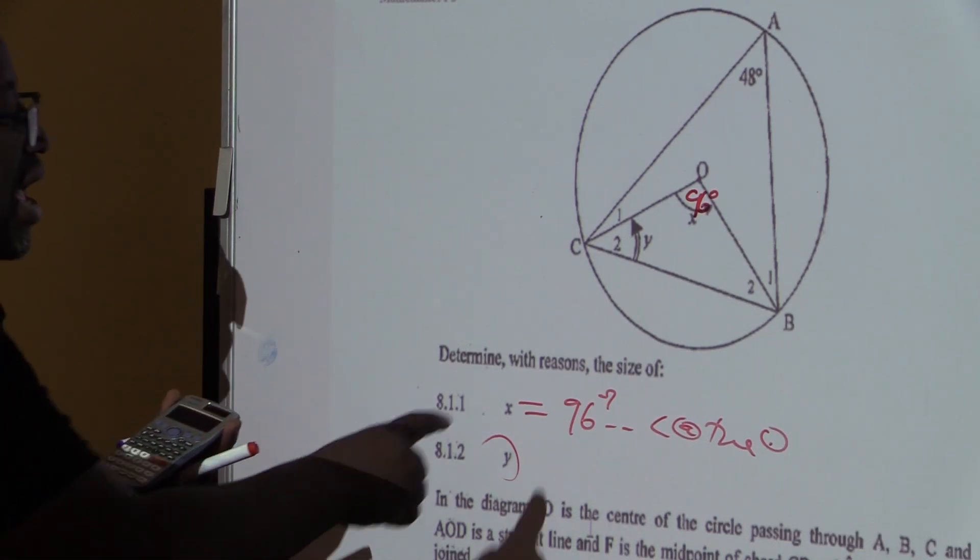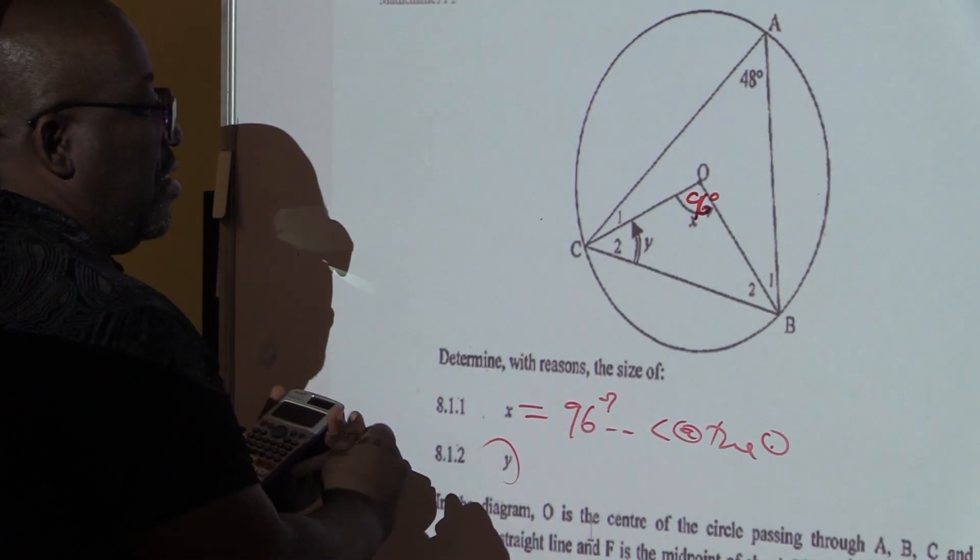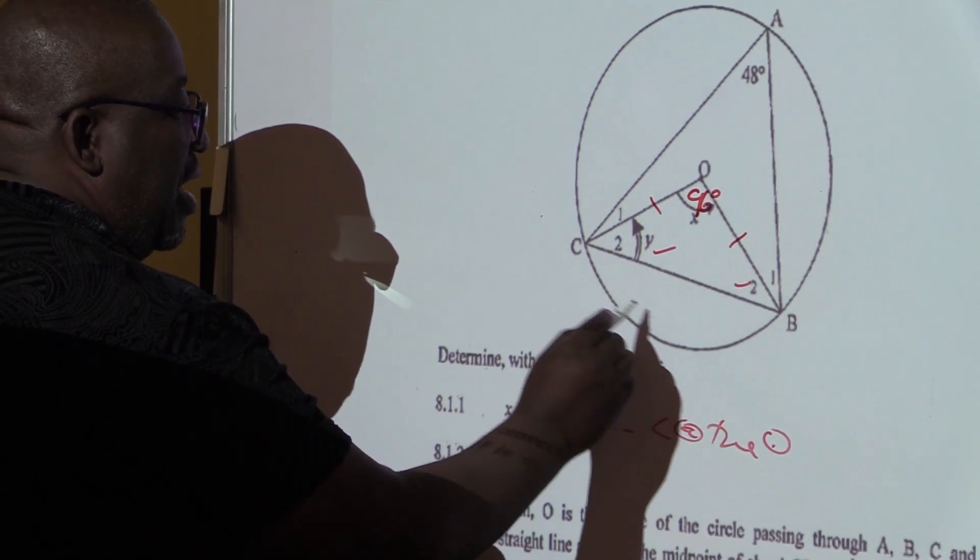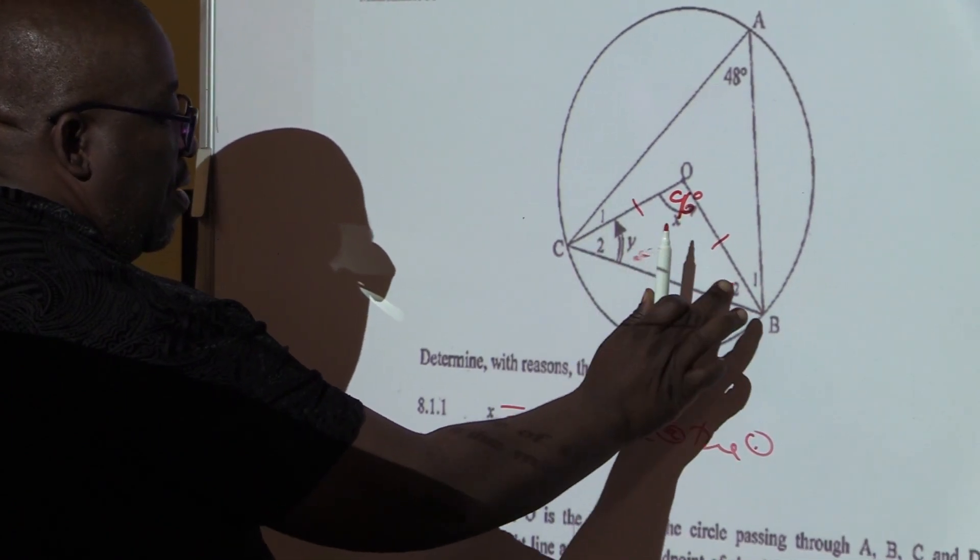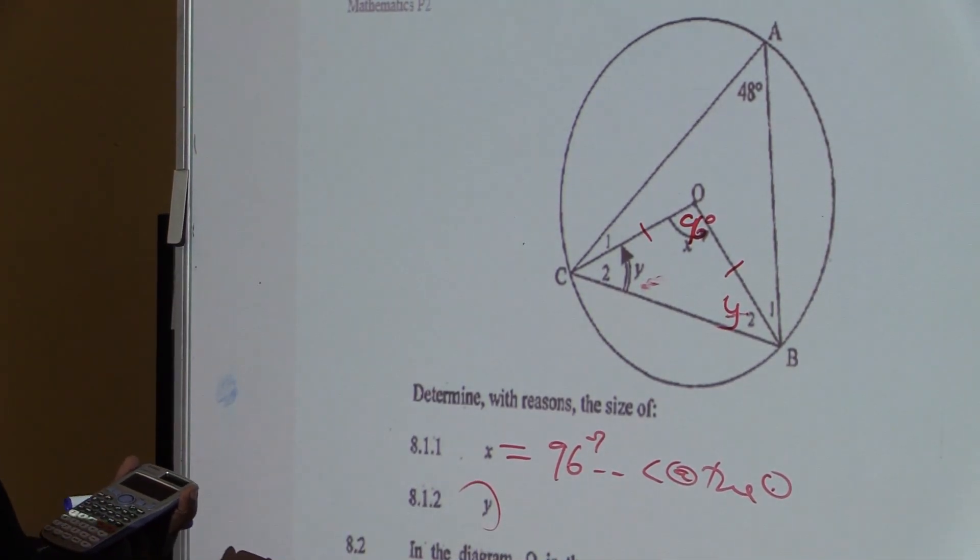Remember that angle Y, if this is angle Y, this is the radius. This is the radius. That means this angle is the same as this angle. If this is Y, this will also be equal to Y. And the next question is looking for angle Y.